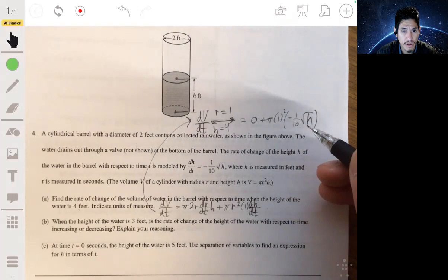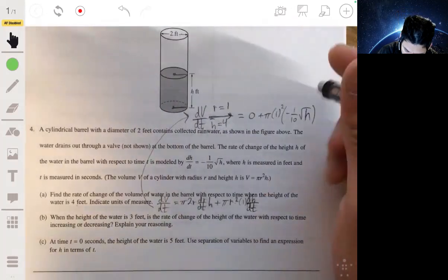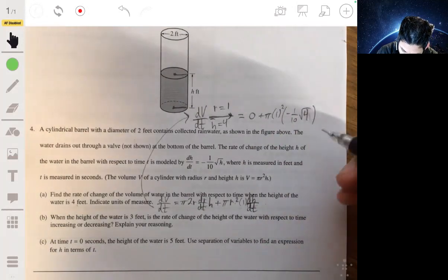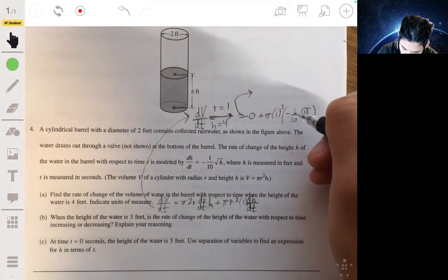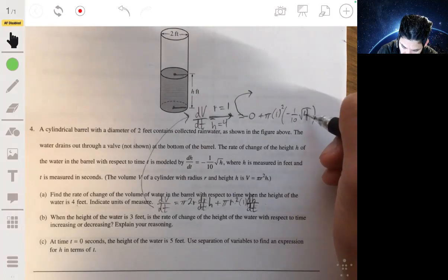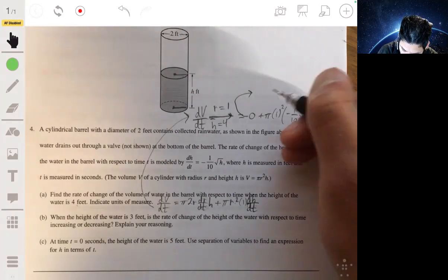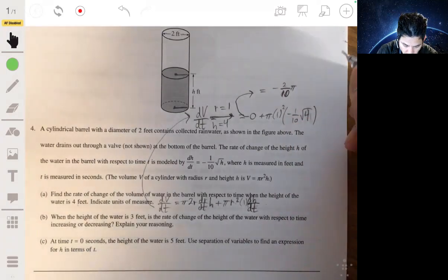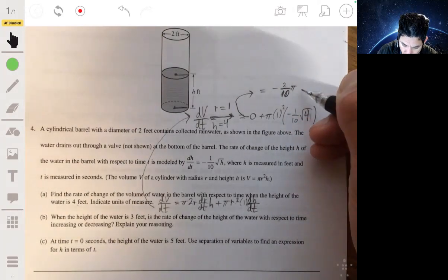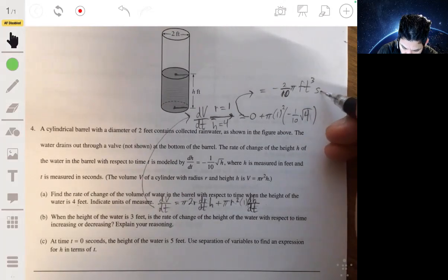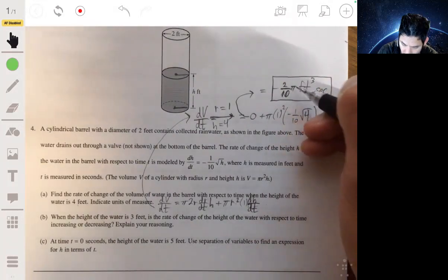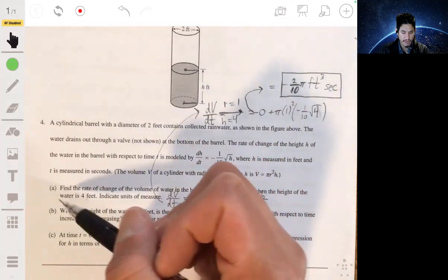Yep. And this will be your answer. We just have to simplify it. It will be negative. Oh, whoops, hon. Let me put the 4 in for h. And going like this. Negative square root of 4 is 2. So negative 2 tenths, 2 tenths pi feet cubed per second, or cubic feet per second. You can simplify it to negative 1 fifth pi if you want. Same thing. So that's part A.